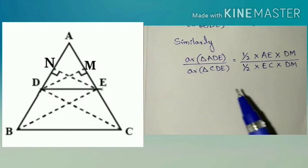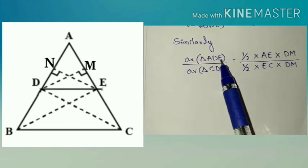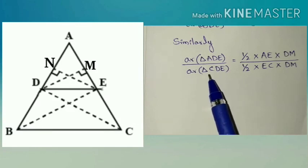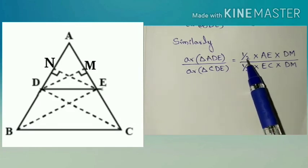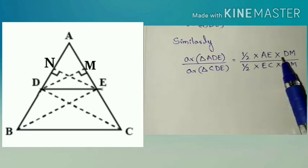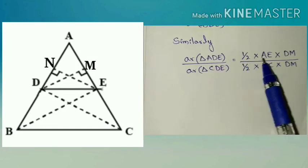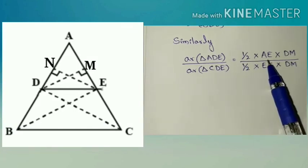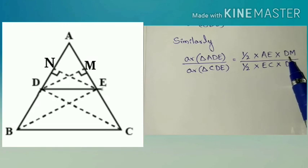Similarly on the right side taking the ratio of area of triangle ADE and area of triangle CDE. Same here also using the half into base into height formula. Half into here in ADE we will get the base as AE and height as DM.